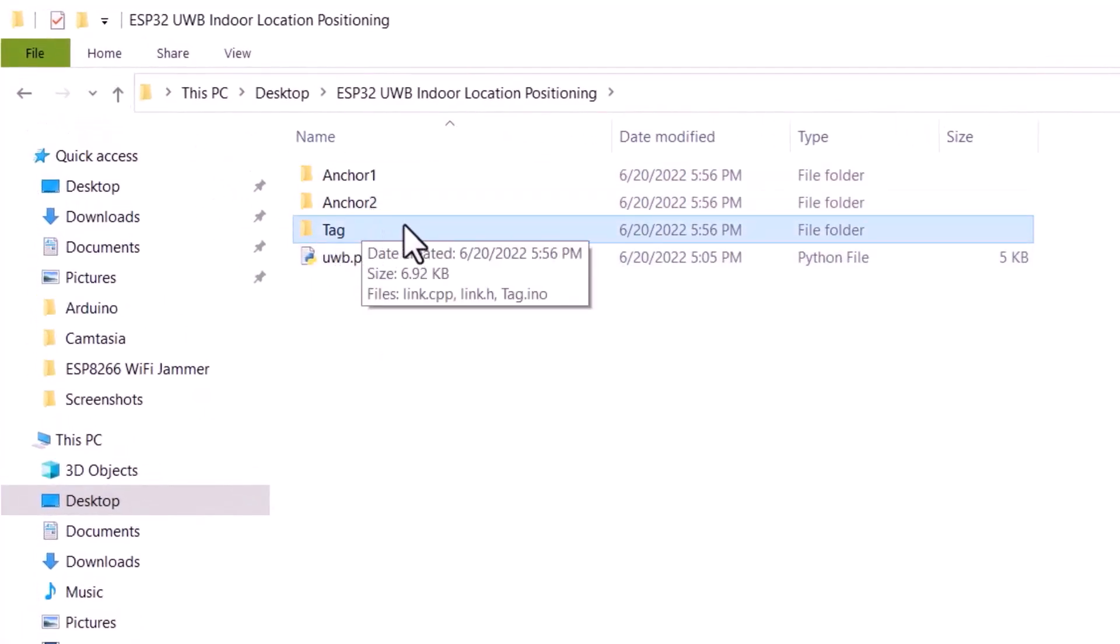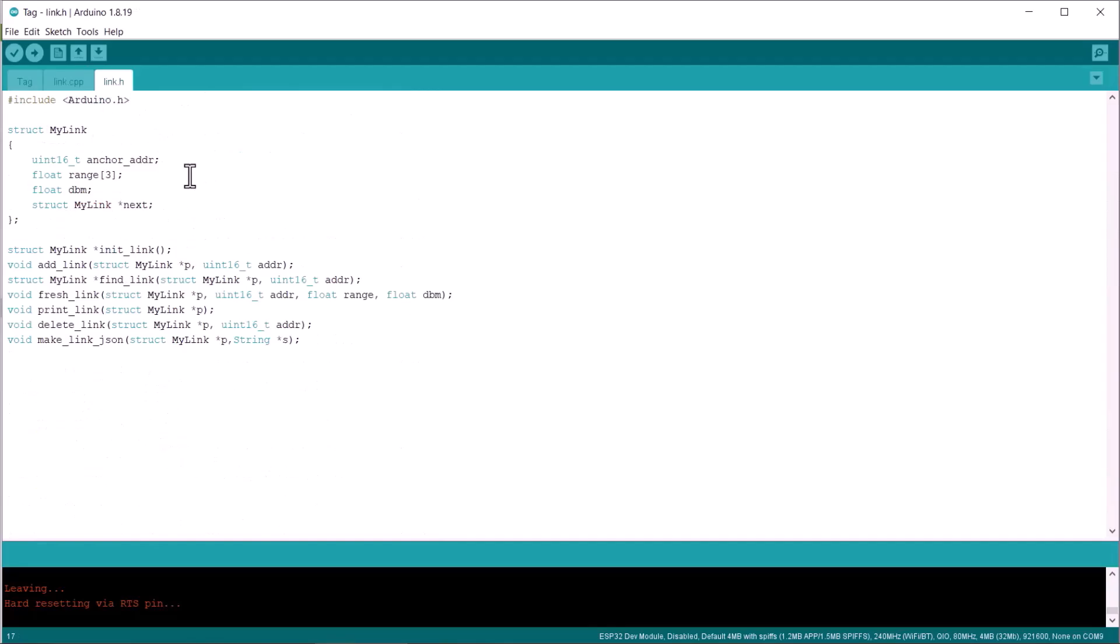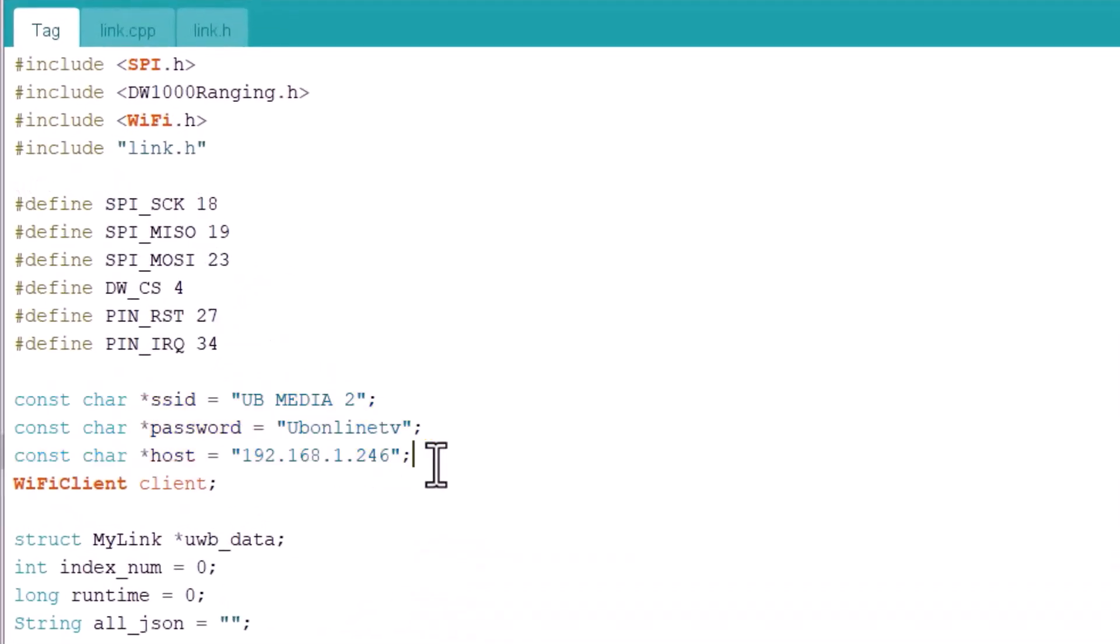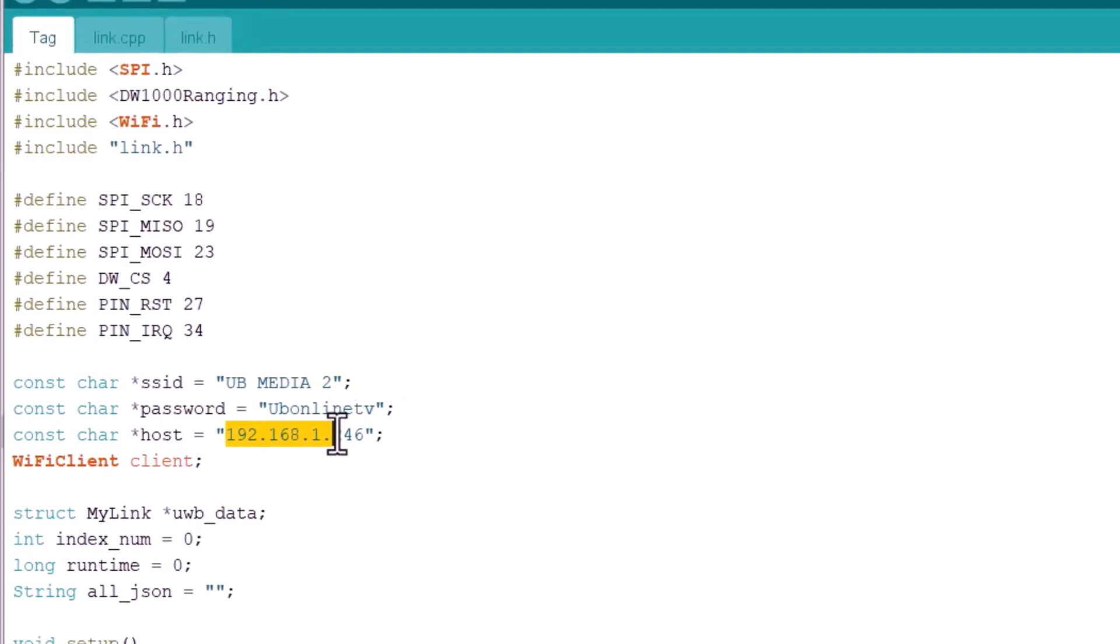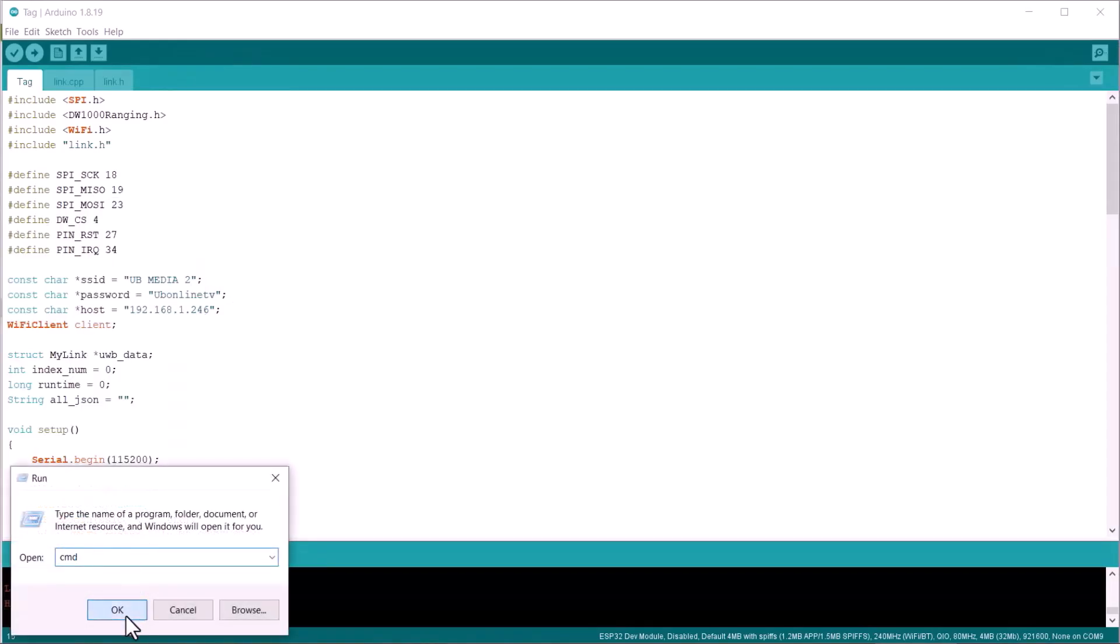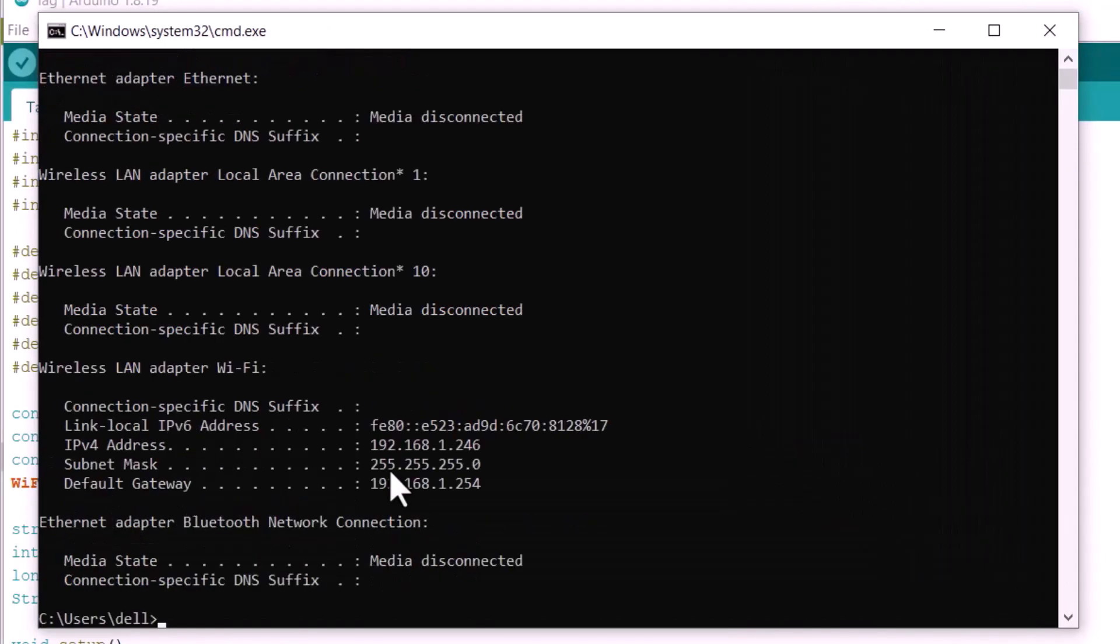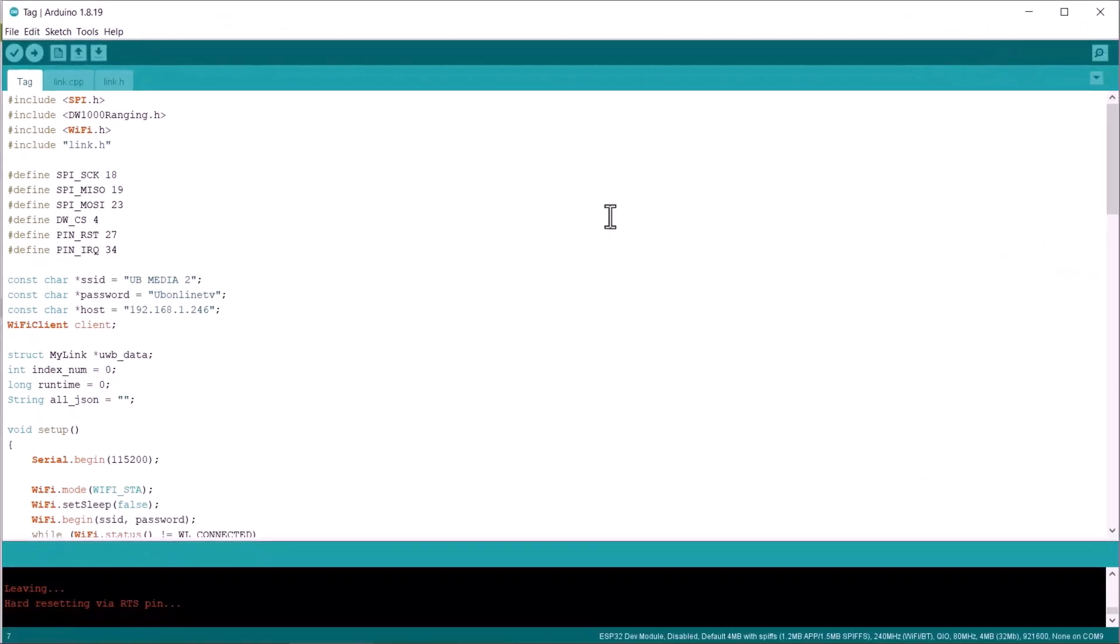Now, open the tag code. The tag code is little long compared to the anchor code. The tag code has two tabs as well. In this code, we need to modify these three lines. The first one is Wi-Fi SSID and the second one is Wi-Fi password. You can enter your local Wi-Fi credentials. We need to change the IP address now. For that, we will use the IP address of the PC. To find out your PC IP address, open your command prompt. Then type ipconfig and hit enter. So here is the IPv4 address. Copy this address and put it in your code. Connect the third port to your PC. Go to tools and select the port and the COM port. Then upload the code.